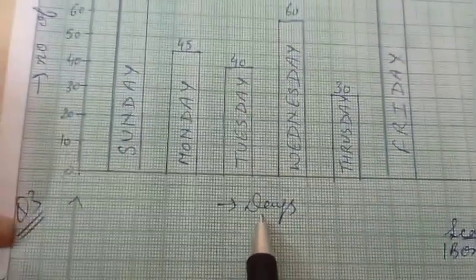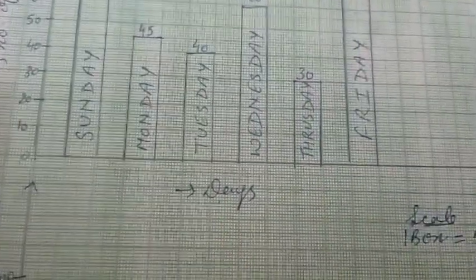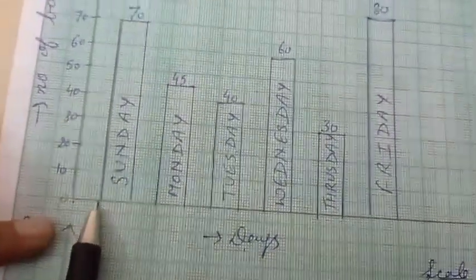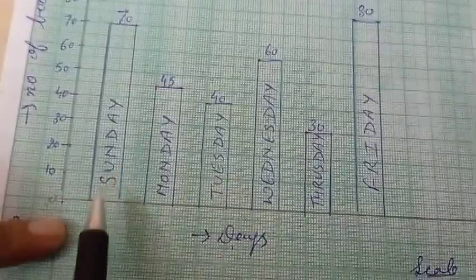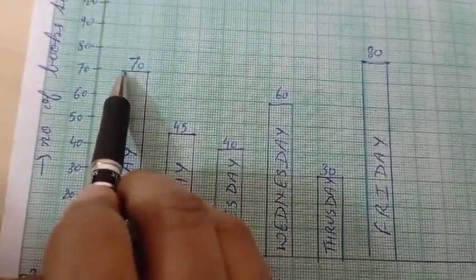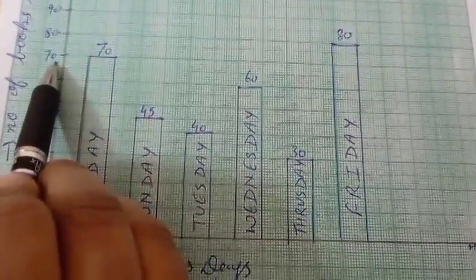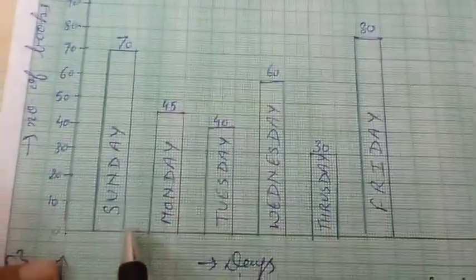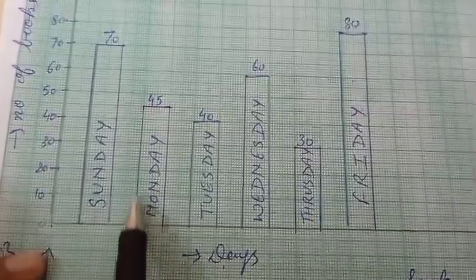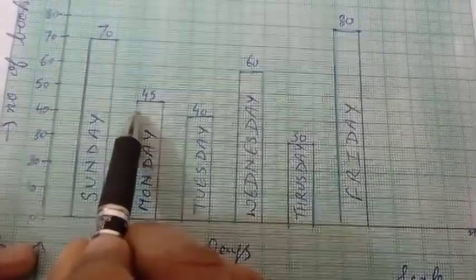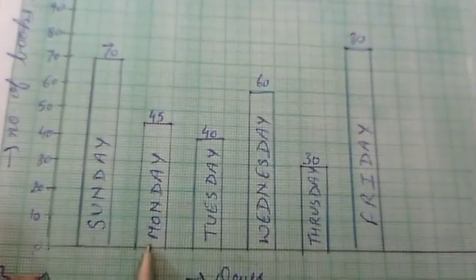On the other side write 'Days'. Sunday had 70 books sold, so leave one box — it is compulsory — then draw the bar up to 70 and write 'Sunday' in front of it. On Monday, 45 books were sold. Leave one box, then draw the bar: 40, 41, 42, 43, 44, 45 — draw up to 45 and write 'Monday'.